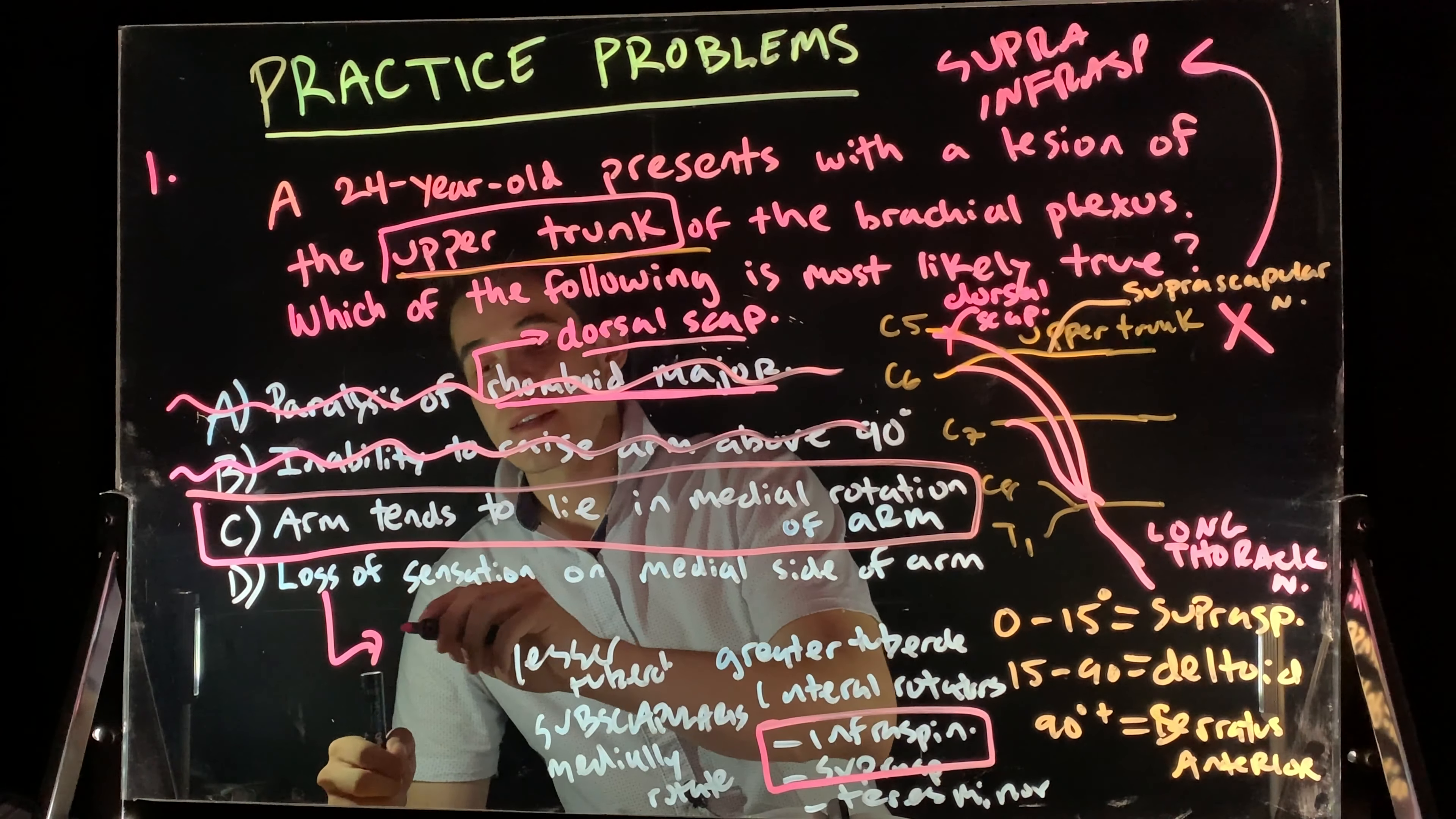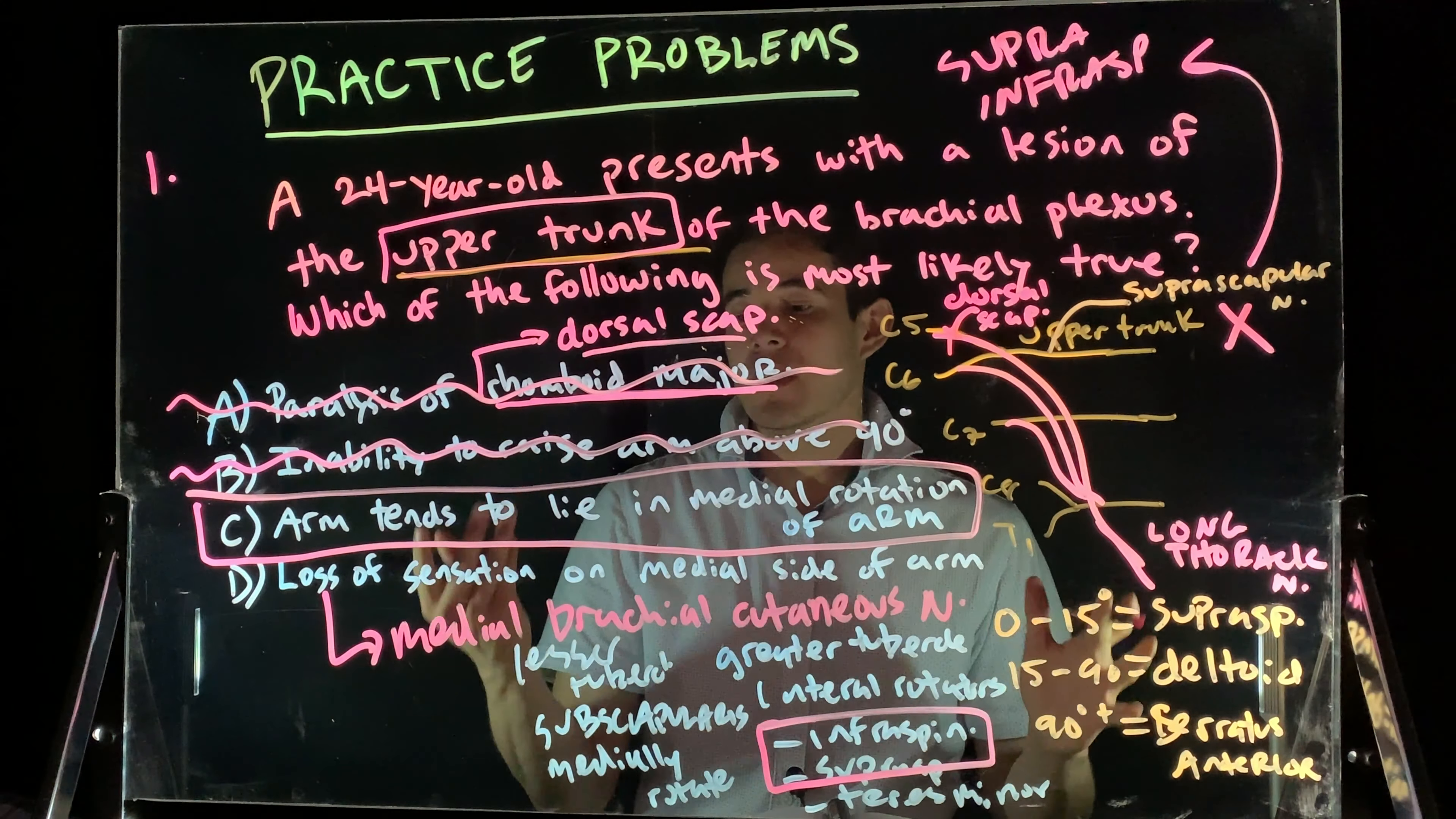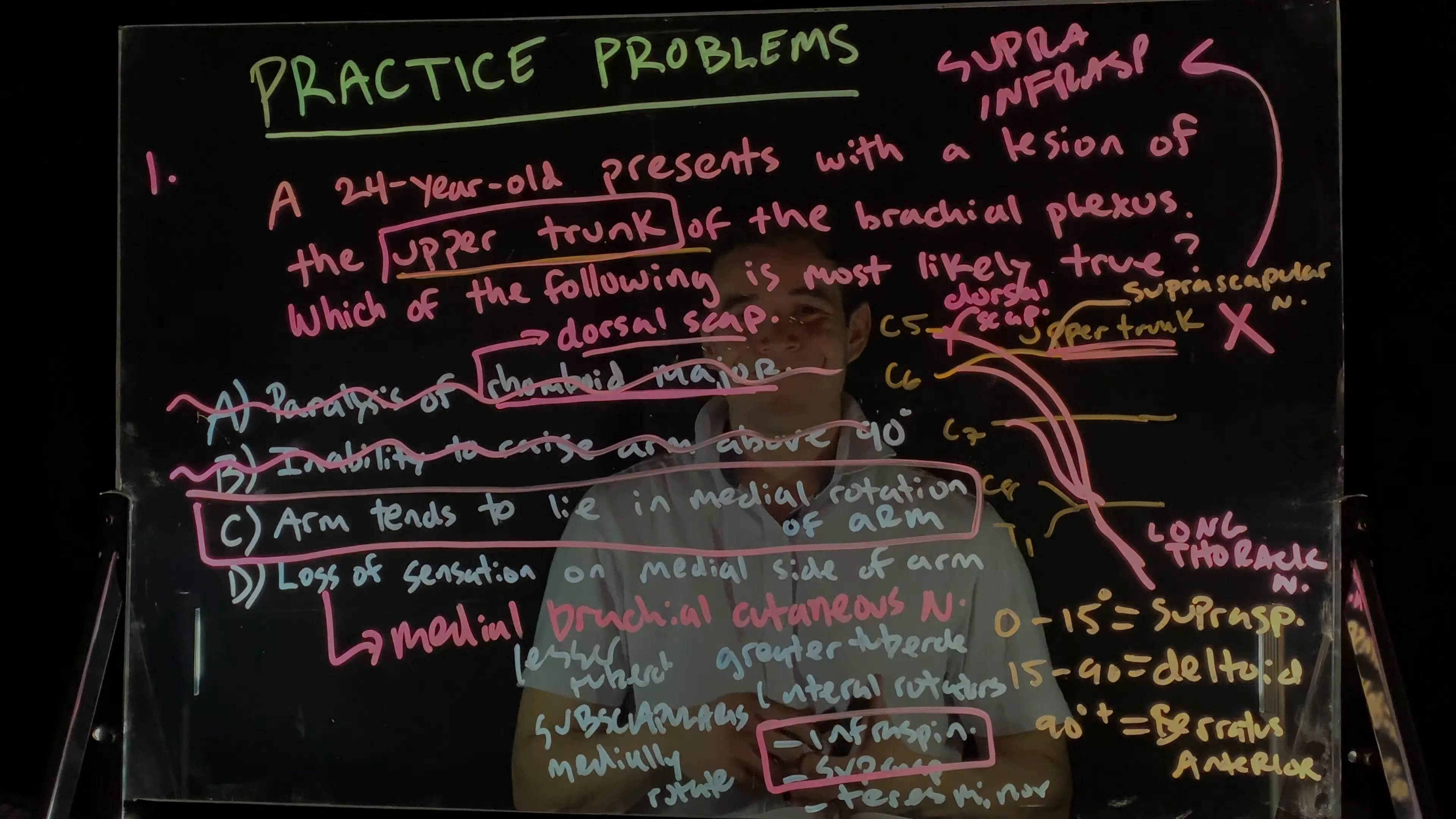This is my medial brachial cutaneous nerve. So, nowhere here are we involved with our medial brachial cutaneous nerve because we know that comes off the medial cord and we're dealing with, specifically, our upper trunk. All right? Hopefully, that was helpful, guys.